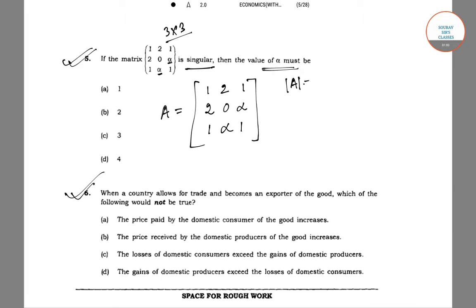So determinant A equals one into zero into one, that is zero, minus alpha squared. So minus alpha squared minus two into two minus alpha, plus one into two alpha minus zero, so one into two alpha.